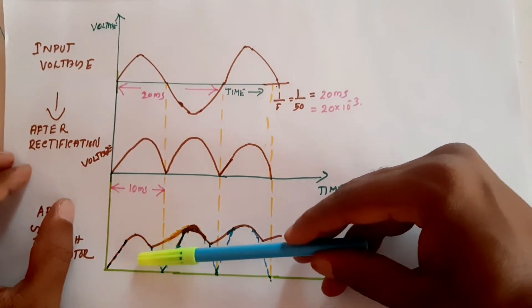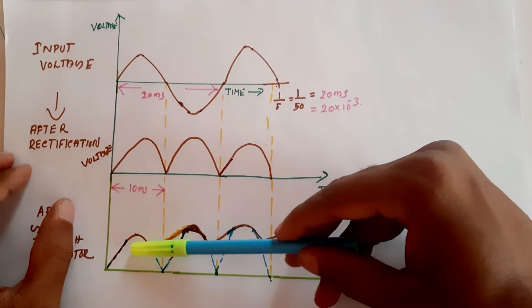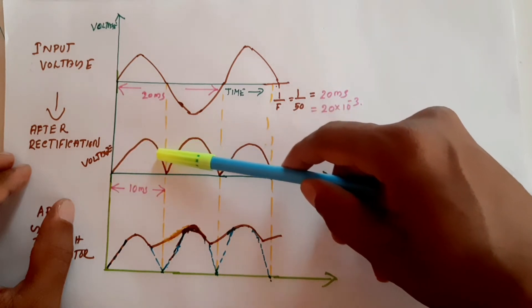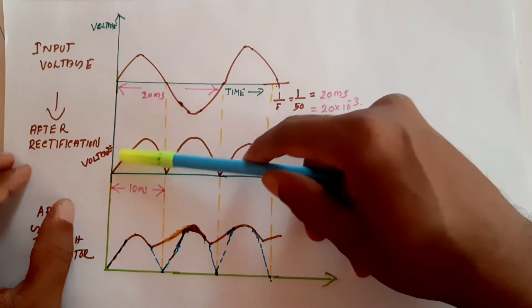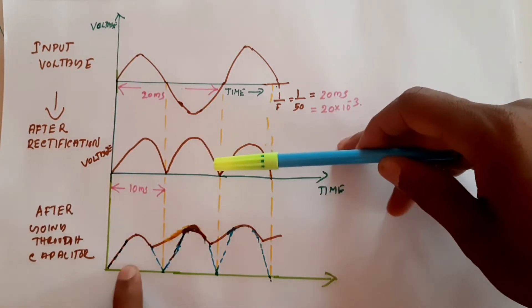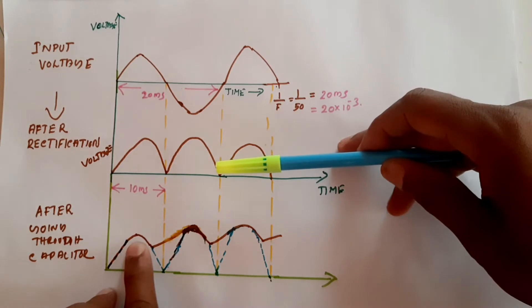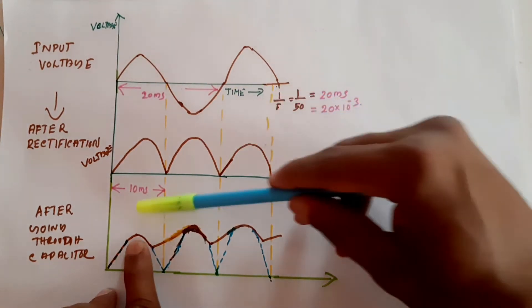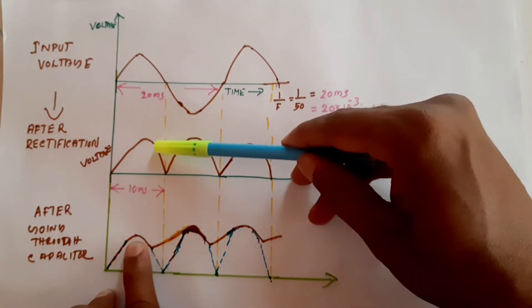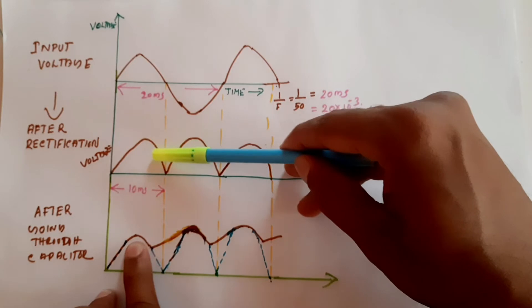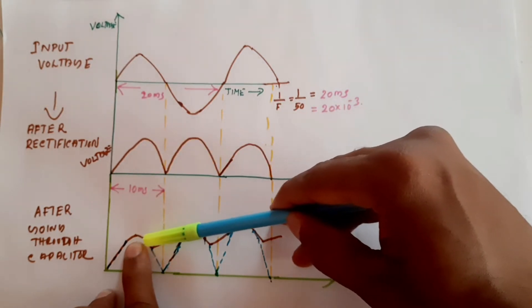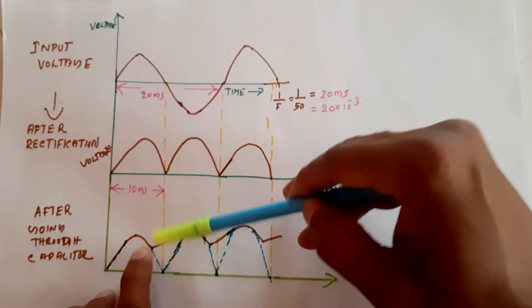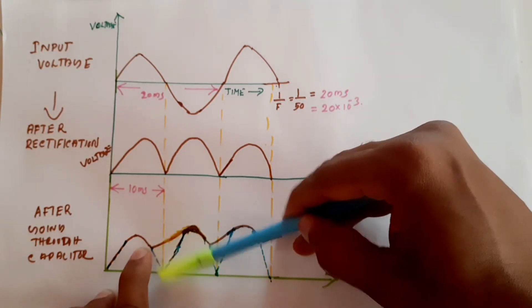The purpose of the capacitor is to avoid the ripple. Without a capacitor, the output voltage of the bridge rectifier follows the rectified waveform path. But when a capacitor is connected, the waveform changes — as the input voltage increases to its maximum and then starts decreasing, the capacitor, having stored some energy, will not let the voltage drop to zero.